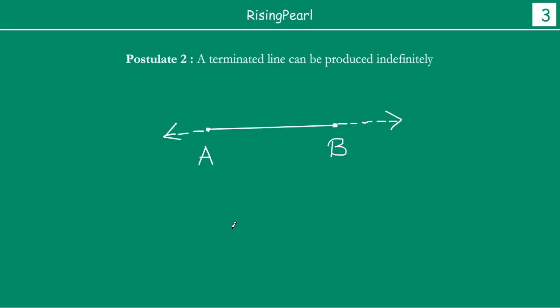Aap kabhi nahi keh sakte ki yeh aapki line hai, because this line can always be extended further. To show that a line continuously extends on both ends, we put arrows. If you recall our Series 4 on linear equations in two variables and graphs, whenever we drew a straight line we put arrows at the end — to show that lines extend indefinitely on both sides. The portion of a line between two marked points is what we call a line segment.